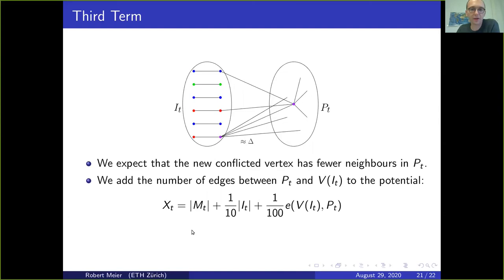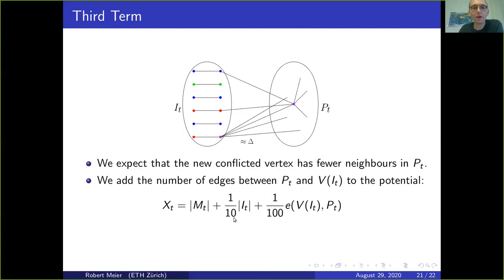To recap: if we pick a large component, we expect strong drift from the first term. If we pick an isolated edge with many non-properly-colored neighbors, we expect the edge to move somewhere it is no longer isolated, shrinking M_t. In the final case, where essentially all neighbors of isolated edges are properly colored, we decrease the number of edges between I and P.